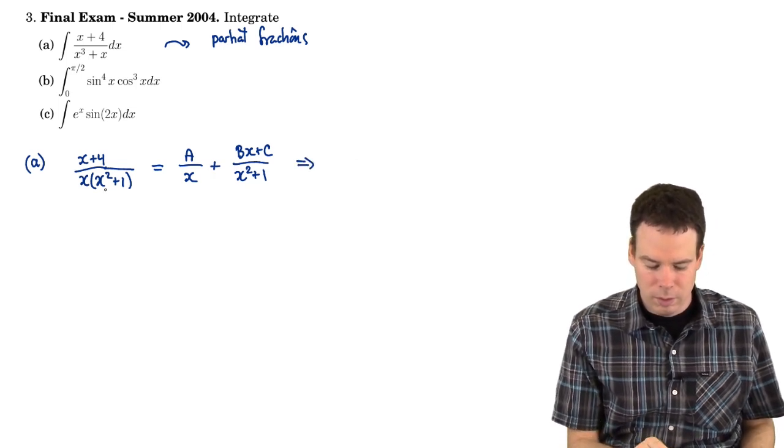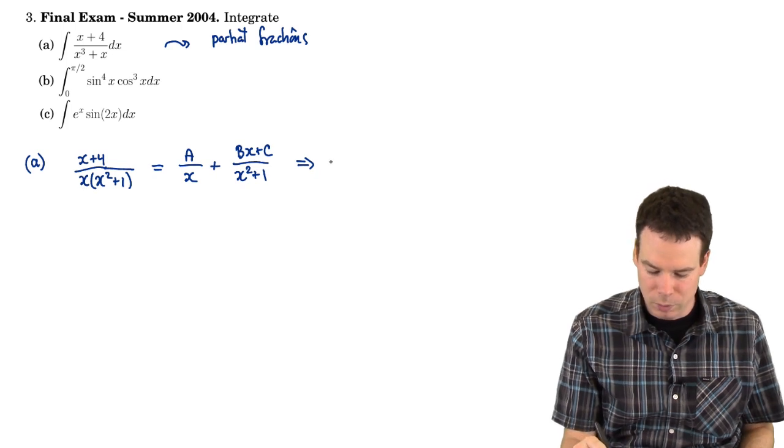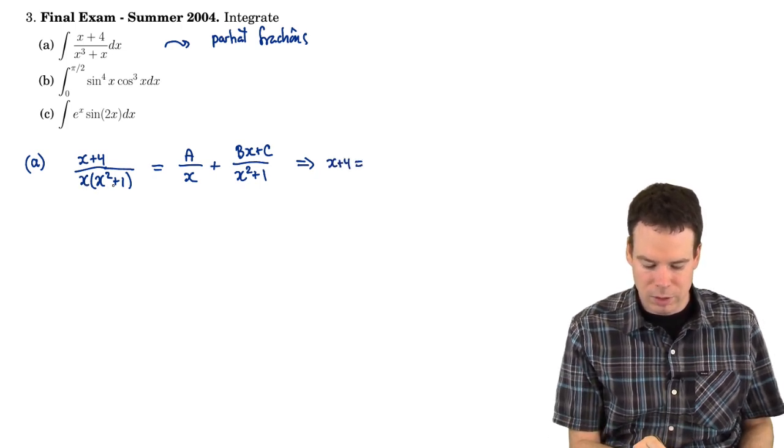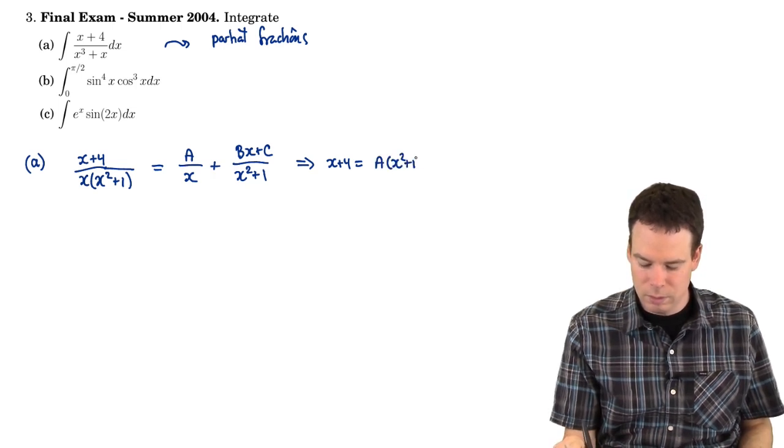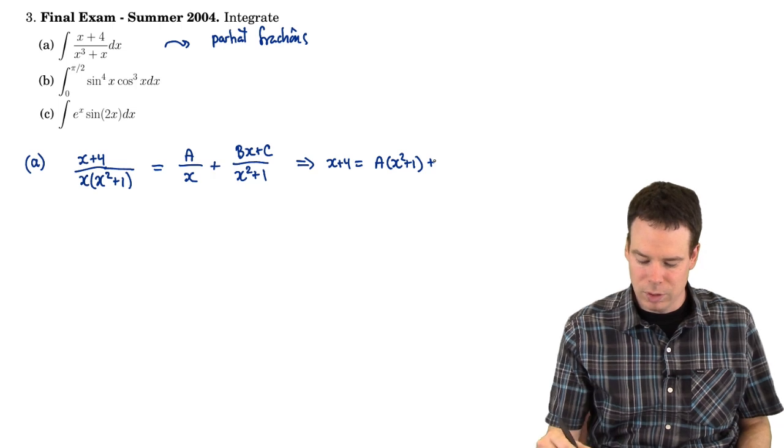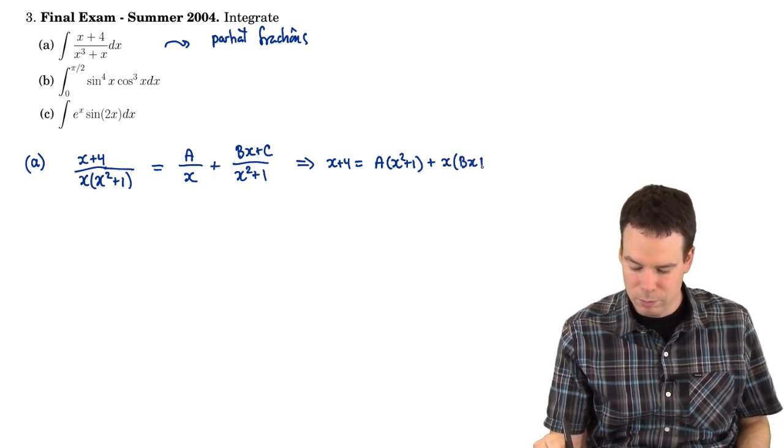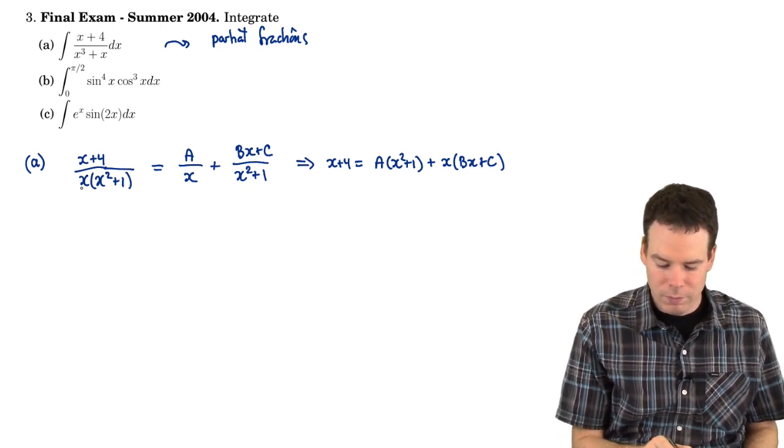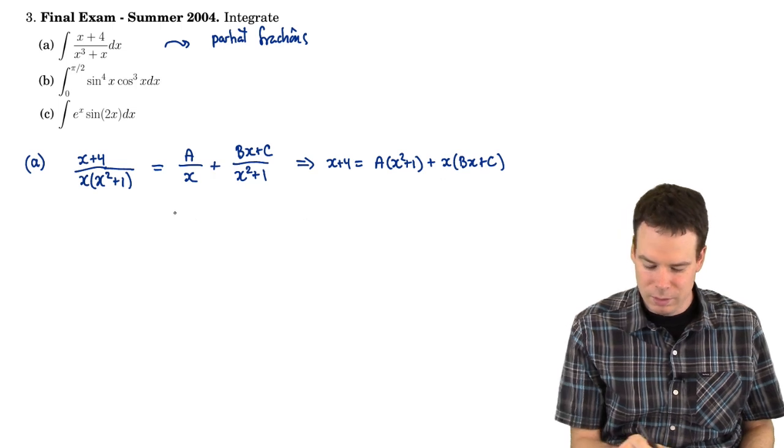Well, we can clear denominators by multiplying both sides by the x times x squared plus 1, so that gives us x plus 4. And then the x times x squared plus 1 times a, the x's will cancel. And we get an a times x squared plus 1, and then the other piece would be a b times bx plus c. So I've cleared denominators. Whatever a, b, and c have to be to satisfy this, they have to be the same a, b, and c that satisfy this expression.